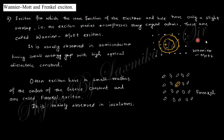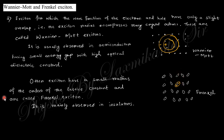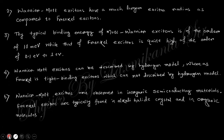There are two types of excitons: the Wannier-Mott exciton and the Frenkel exciton. In the Wannier-Mott exciton, the electron-hole pair is spread over a large region, with a cloud of positive and negative charge separated over a relatively large distance. This is the basic difference between the two types.